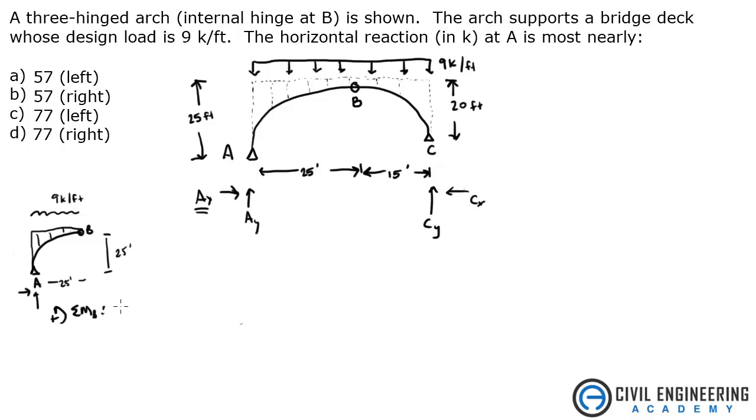Then I'm going to get nine kips per foot times 25 feet is that length. And of course, when you do that, you've got to multiply it by 12 and a half because this load's acting at half that length. So a little times 12 and a half plus AX times 25 minus AY times 25 equals zero.